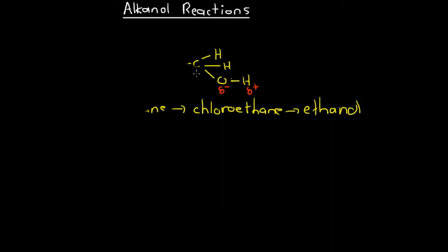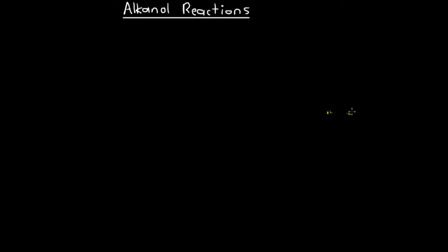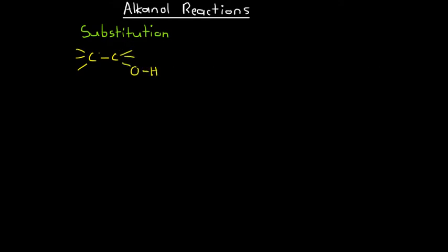Now we'll have a look at the types of reactions that alkanol molecules can undergo. The first type is a substitution reaction — these are very common reactions that many organic molecules can undergo. Alkanol is often produced via a substitution reaction of chloroethane. So if we want our ethanol molecule to undergo a substitution reaction, we can get rid of the hydroxyl group and substitute it for an amino group. This is how we often produce amines.